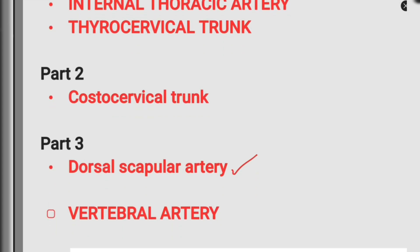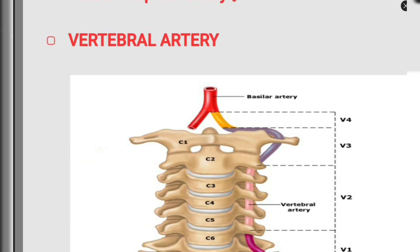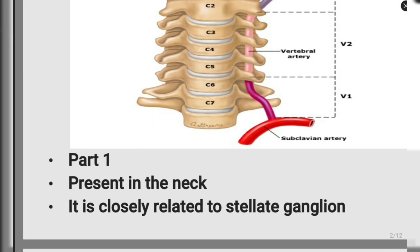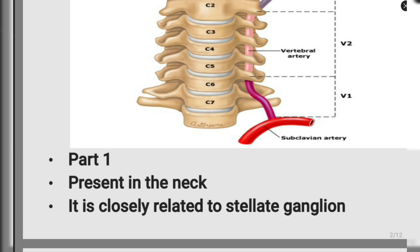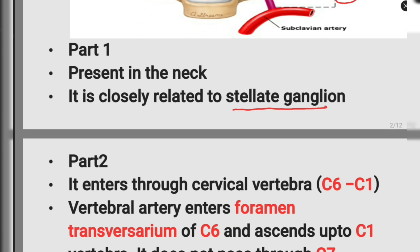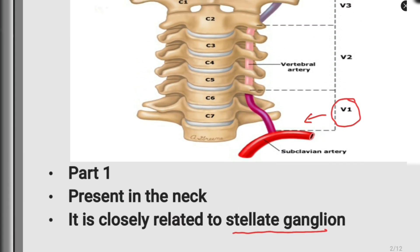Now let us discuss the vertebral artery, which is a branch of the first part of the subclavian artery. The vertebral artery is divided into four parts. The first part is present in the neck, closely related to the stellate ganglion. The second part enters the cervical vertebra from C6 — it does not enter through C7 — and ascends up to C1.